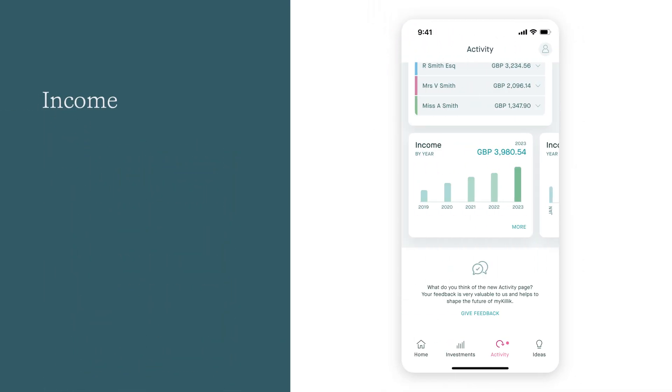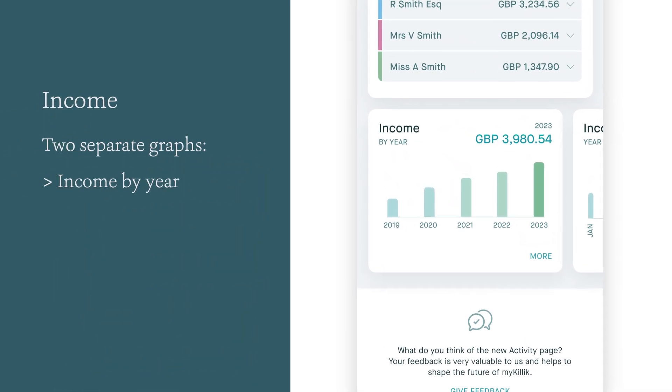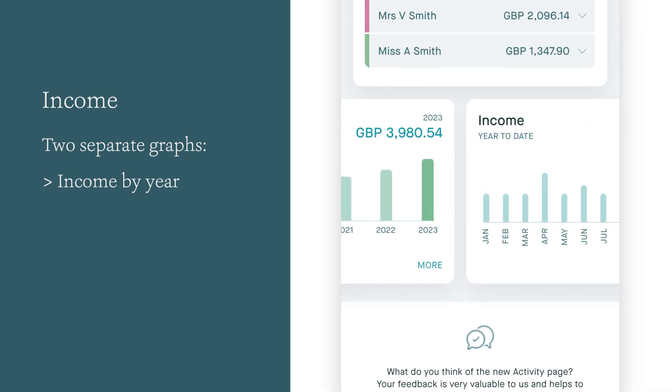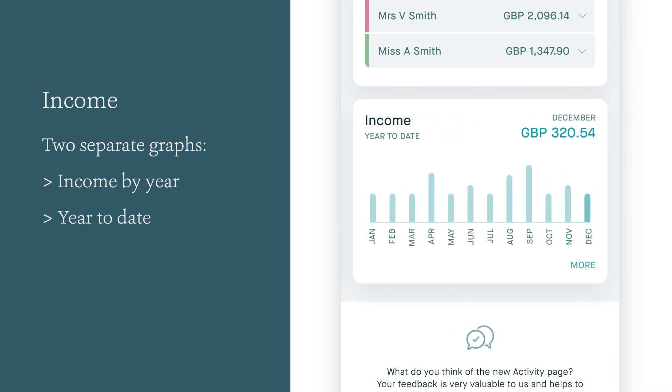Income has two separate graphs: income by year, showing the last five years worth of income, and year to date, showing income over the past calendar year.